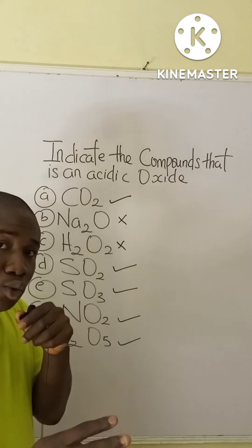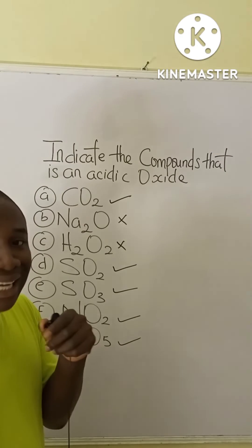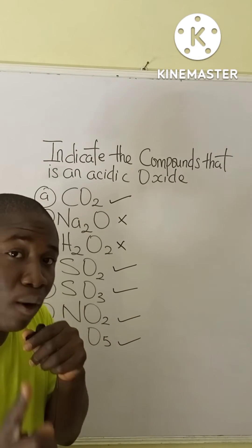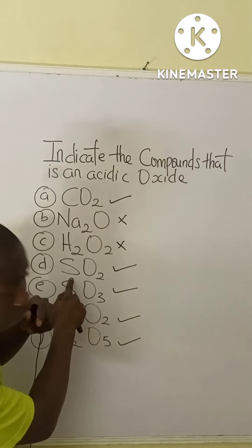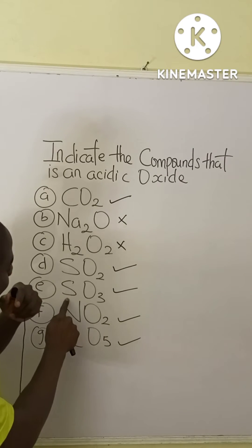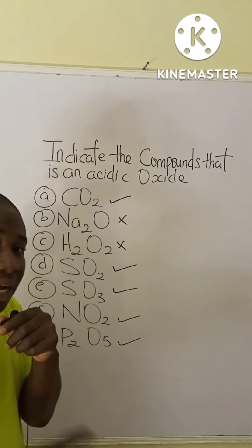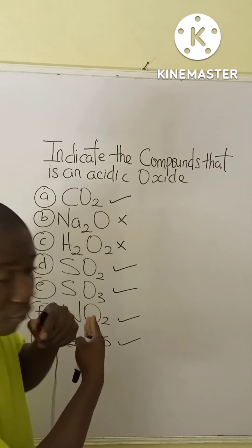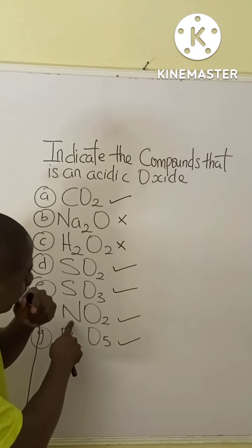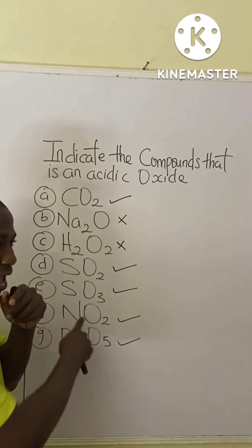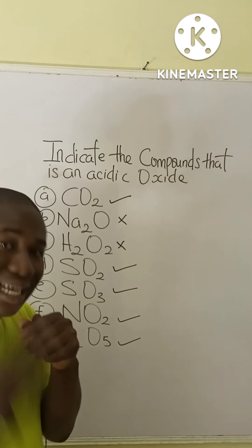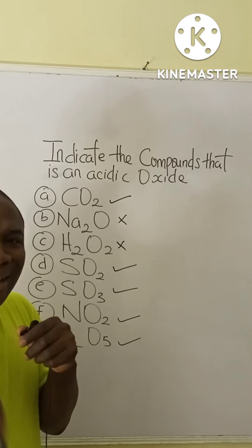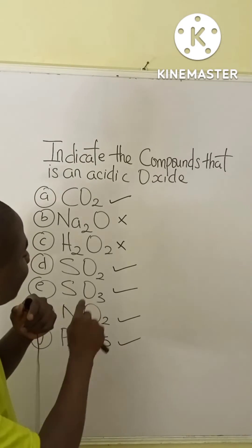Moving to option D, SO₂ is an acidic oxide because sulfur is a non-metal. The same applies to SO₃ — it is still an acidic oxide because sulfur is a non-metal.